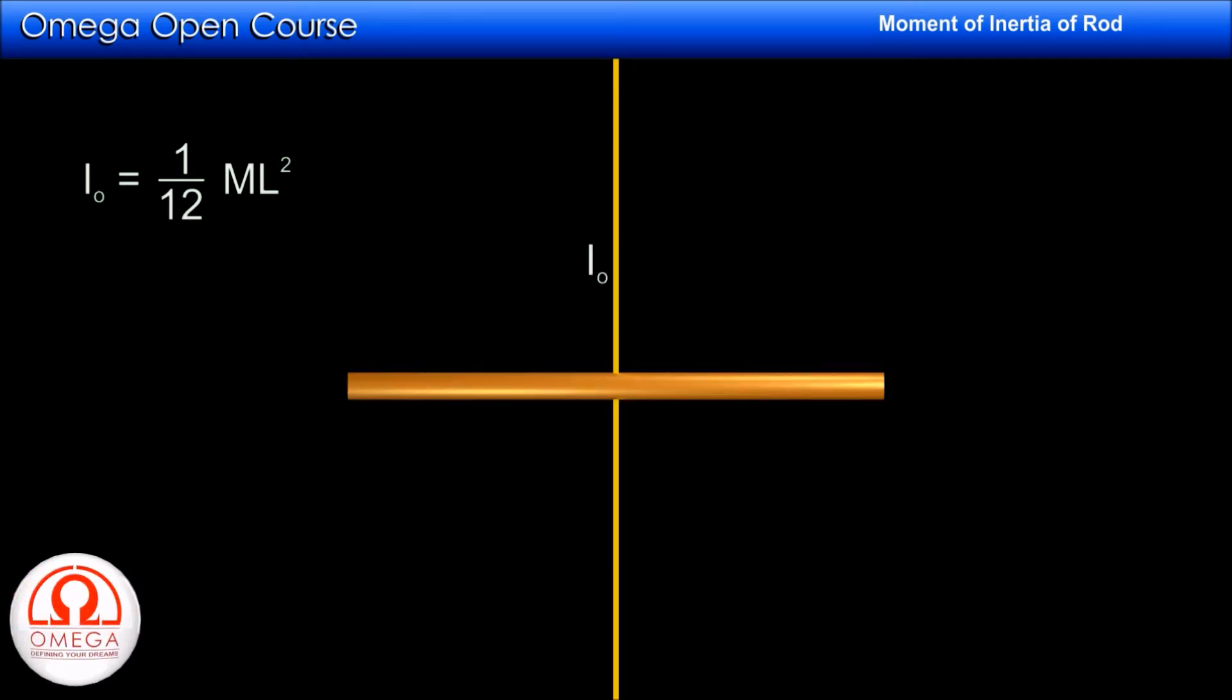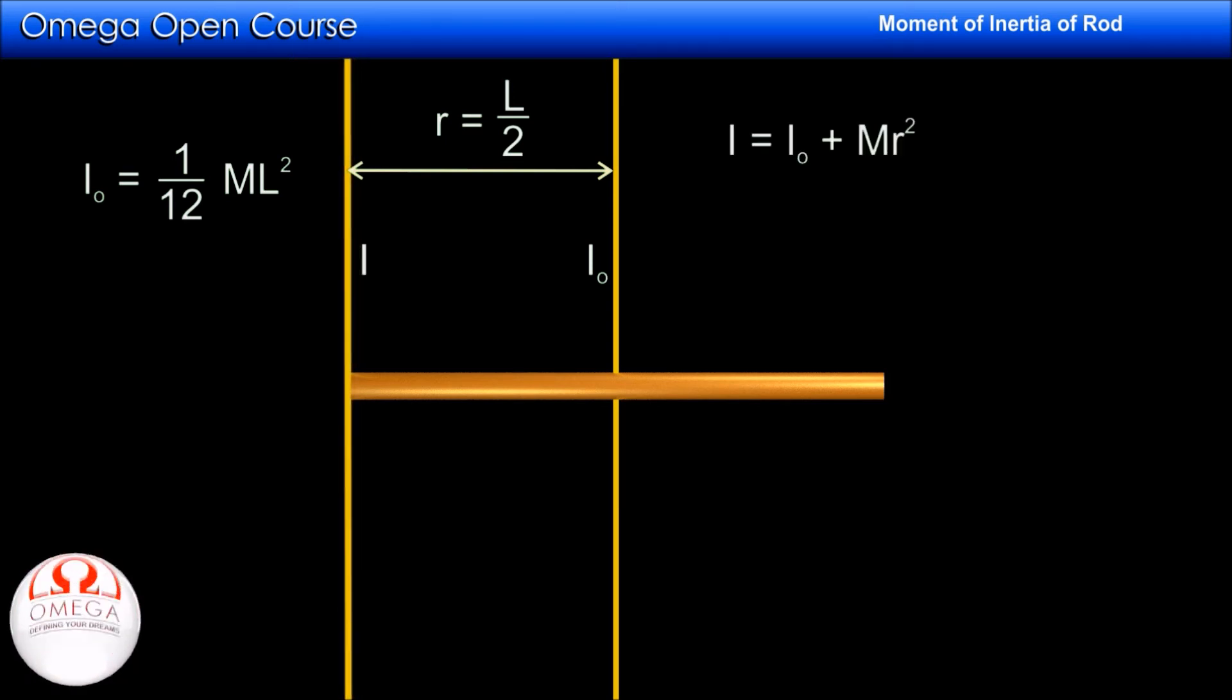Let us take another axis parallel to the given axis and passing through the end of the rod. The distance between the two axes is L/2. As per the parallel axis theorem, the moment of inertia about this axis is given by moment of inertia about the axis passing through the center of mass plus mass times the square of distance between the two axes.